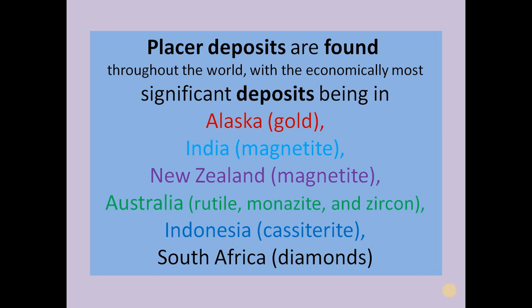Significant placer deposits are noticed in Alaska — gold deposits; India — magnetite deposits; New Zealand — magnetite deposits; Australia — rutile, bauxite, and zircon deposits; Indonesia — cassiterite deposits; South Africa — gold deposits.